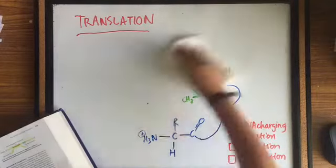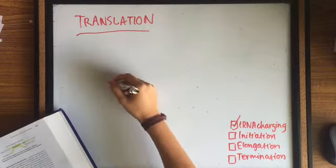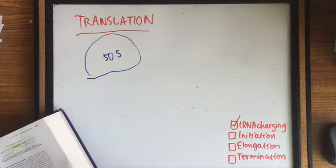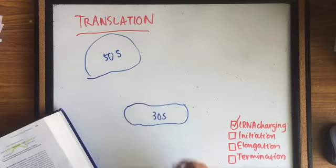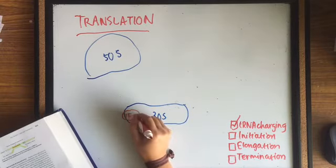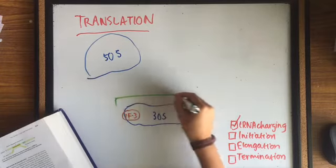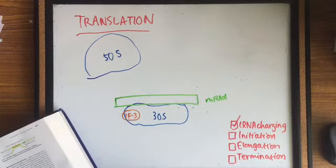After tRNA charging, we are ready to begin the process of initiation. The ribosome consists of two subunits, a large one that is 50S and a small subunit that is 30S. Initiation factor 3 binds to the small subunit, preventing the large subunit from binding. This allows the small subunit to attach to the mRNA.